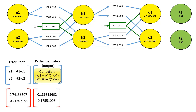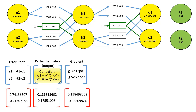The next thing we need to do is calculate how much each of the output neurons contributes to the result — that is, its gradient with respect to the output. We do this in two steps. First, we calculate the derivative, which for our sigmoid function is the output subtracted from 1, all subtracted from the output. And then to complete the gradient with respect to the error value, we take each of those values and multiply it by the error delta. This gives us our gradient vector.